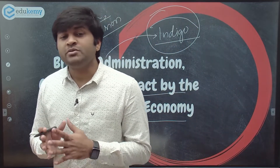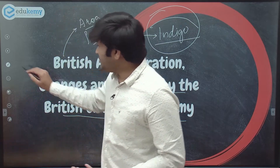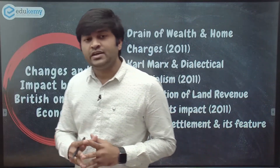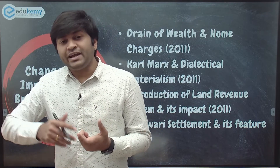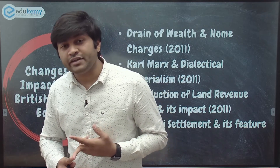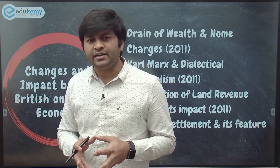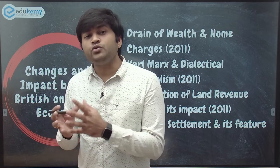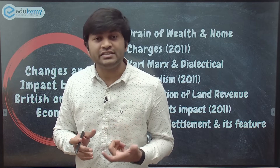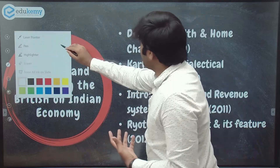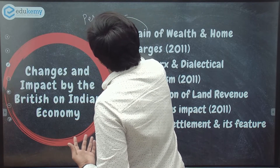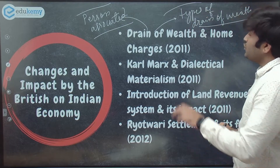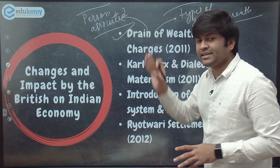Let us understand the theme from the perspective of what type of questions were asked. In 2011, there was a question on drain of wealth and home charges. You need to know the meaning of drain of wealth, its different aspects — home charges, territorial revenue, loans — and the persons who gave this economic critique: Subramaniam Iyer, Gokhale, and Dadabhai Naoroji. The books associated with R.C. Dutt and Dadabhai Naoroji are also important. When learning about drain of wealth, keep all these elements in perspective.